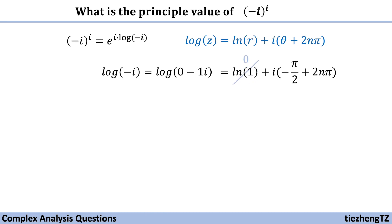Since ln(1) = 0, we can substitute the log(-i) value into the original function. Therefore, (-i)^i = e^(i·(i(-π/2 + 2nπ))).